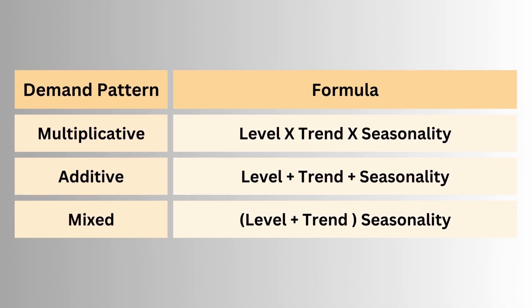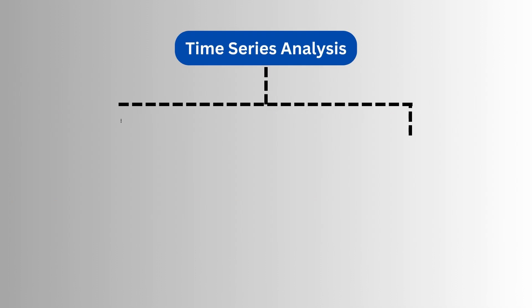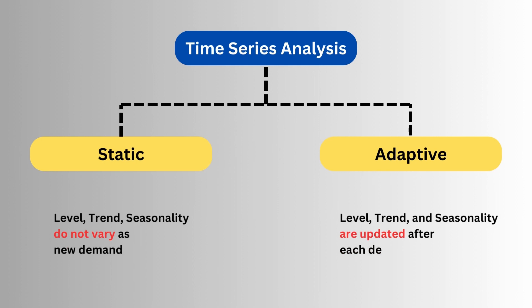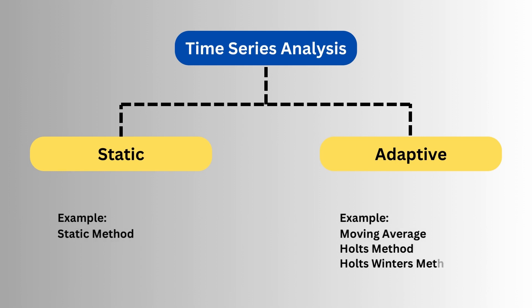Time series analysis can be done in two ways on all these patterns: static and adaptive. In the static method, it is assumed that the estimates of level, trend, and seasonality do not vary as new demand is observed. We estimate each parameter based on historical data and use the same values for all future forecasts. In adaptive forecasting, the estimates are updated after each demand observation. Examples include moving average forecast, Holt method, and Holt-Winters method.